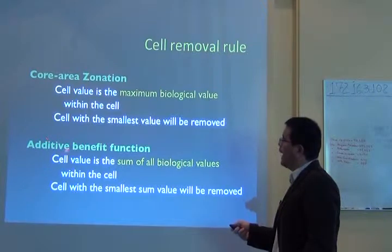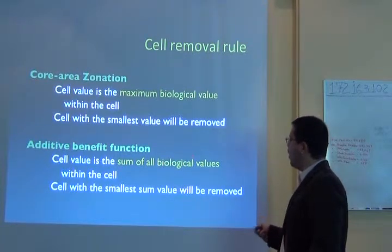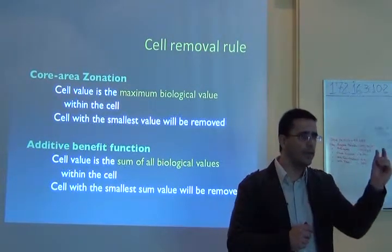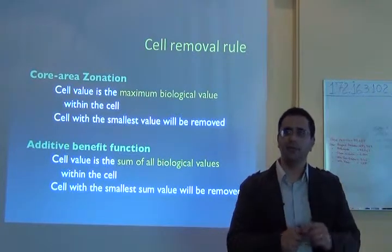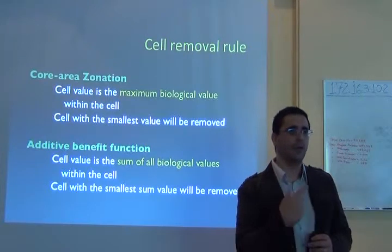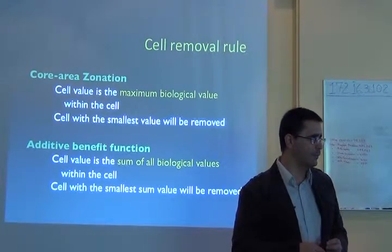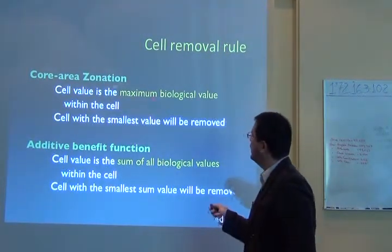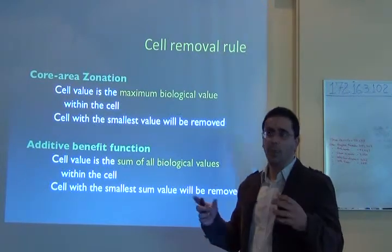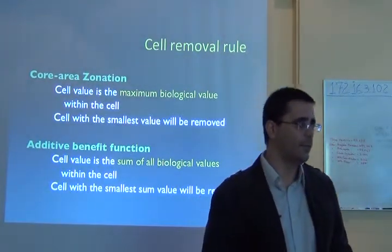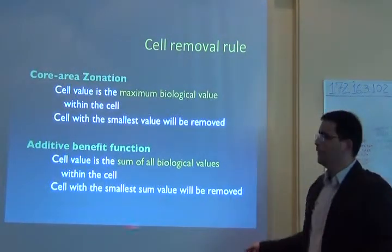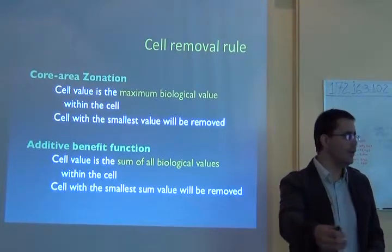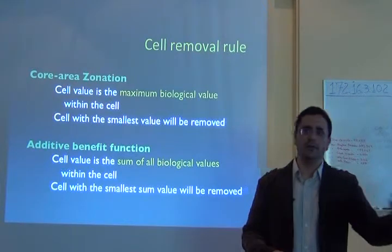Additive benefit function, on the contrary, will sum all biological values within the cell. If you have two species, you have the marginal value for one and for the other, and additive benefit function sums those values to give a combined value of biological importance. In doing so, you're favoring sites with more species — more species-rich sites — because you're summing the values, and the more species you have, the higher the chance to have a great total value.